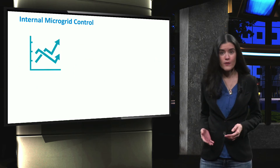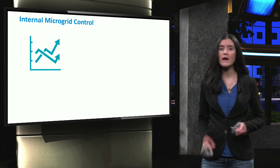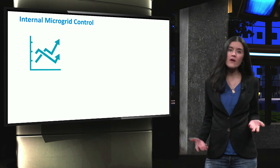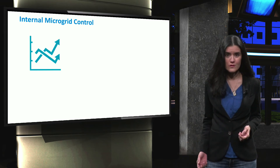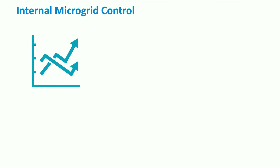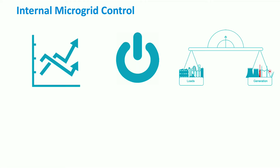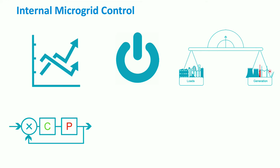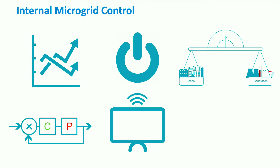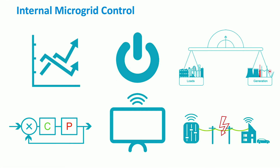The internal microgrid layer performs functionalities within the microgrid that require collaboration of more than two actors. Some of these functionalities are load and renewable energy sources forecasting, load shedding and management, unit commitment and economic dispatch, secondary voltage and frequency control, secondary active and reactive power control, security monitoring, and blackstart and restoration control.